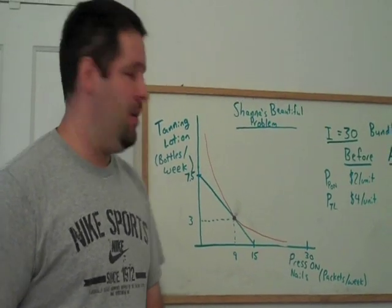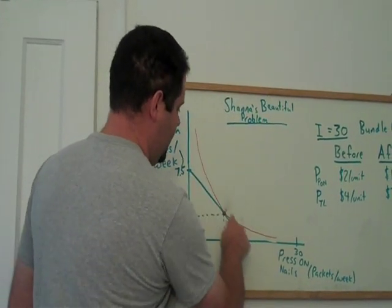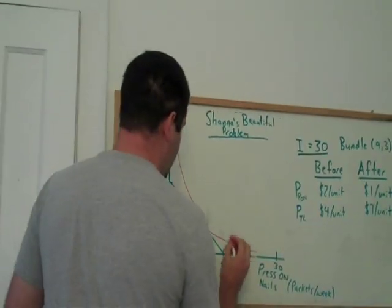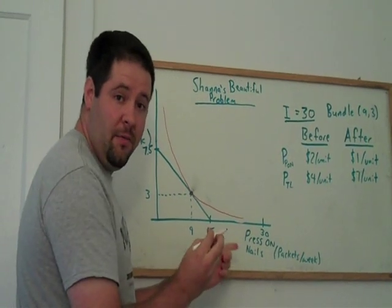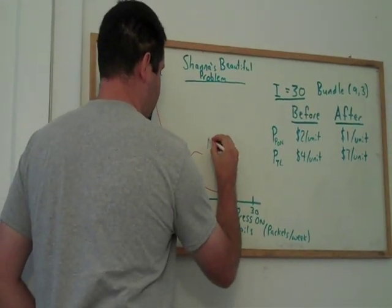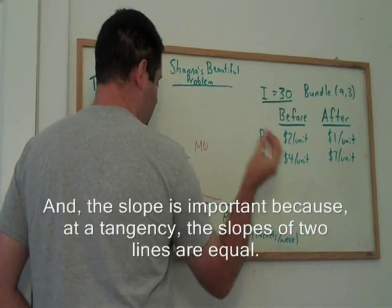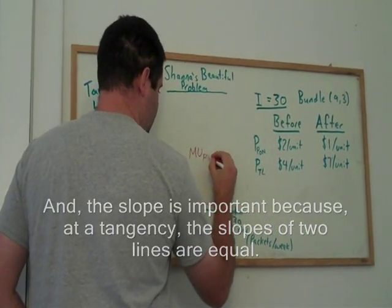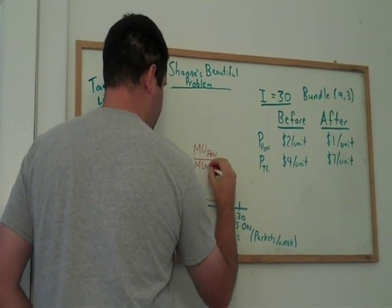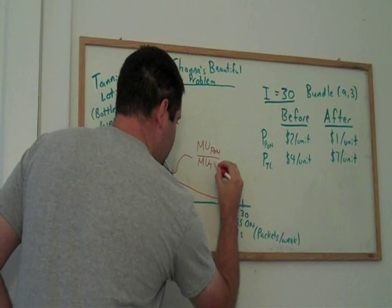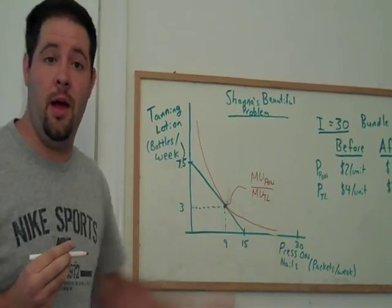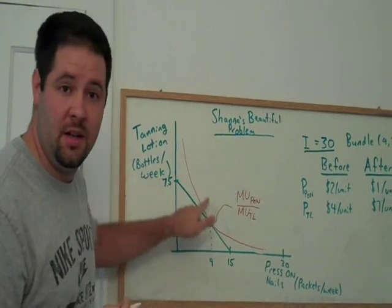We spend a lot of time figuring out what the slope of this indifference curve looks like. I'm just going to go ahead and point that out, that at any point on this indifference curve, we know that the slope is the marginal utility of press-on nails over the marginal utility of tanning lotion. Marginal utility of x over marginal utility of y. We know that anywhere along this indifference curve, that's the case.